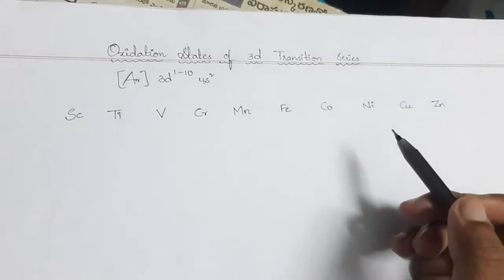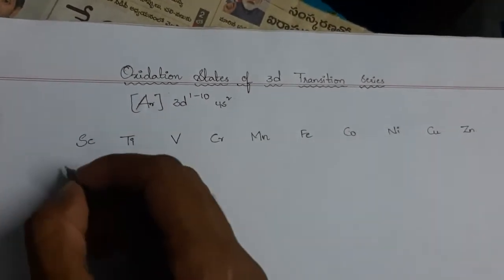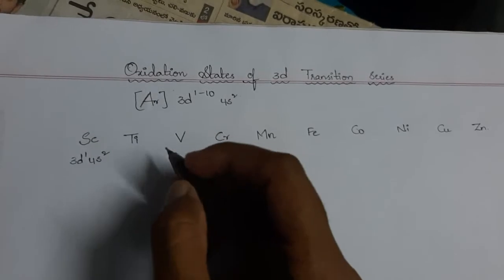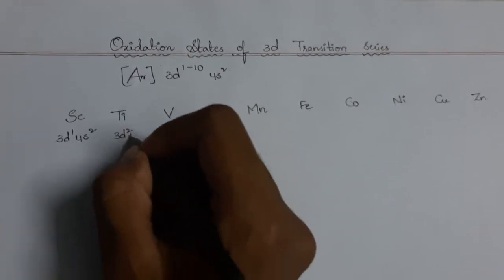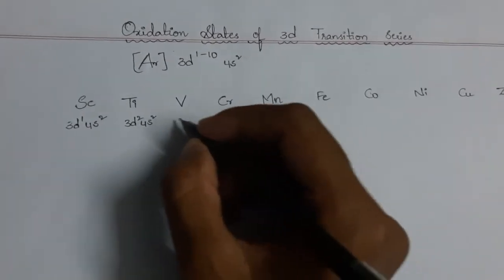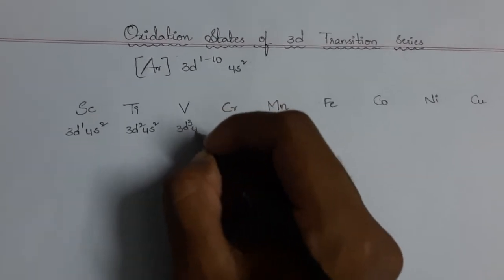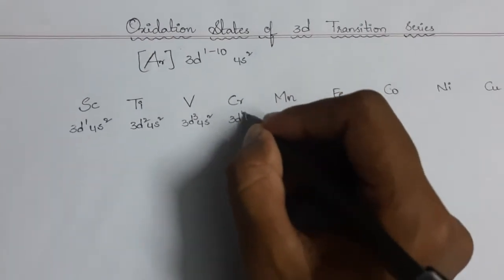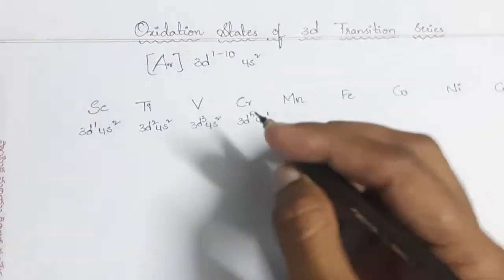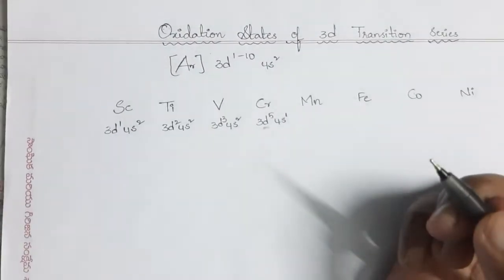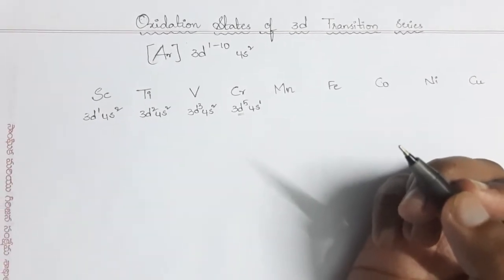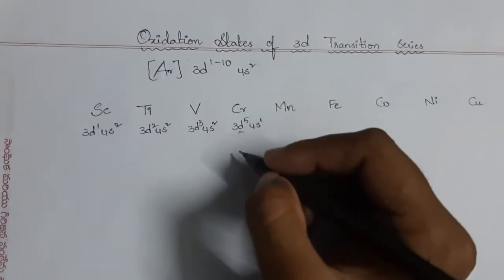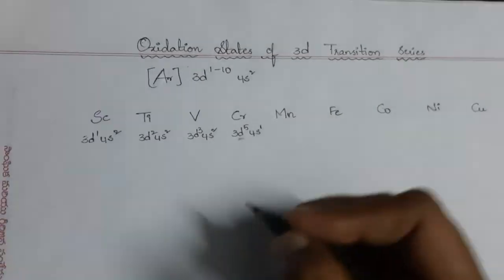Scandium is 3d¹ 4s², titanium is 3d² 4s², vanadium is 3d³ 4s². Chromium is 3d⁵ 4s¹ — we know that when the d orbital is half-filled or completely filled it becomes more stable, so one electron from the s orbital jumps to the d orbital in its excited state, giving 3d⁵ 4s¹.